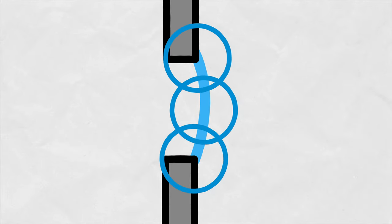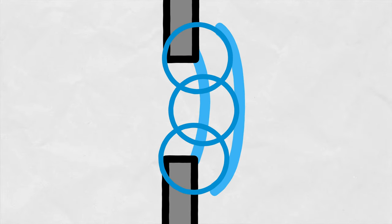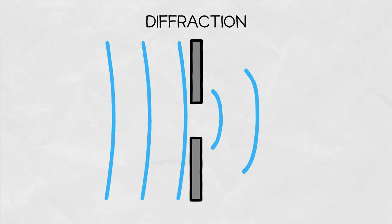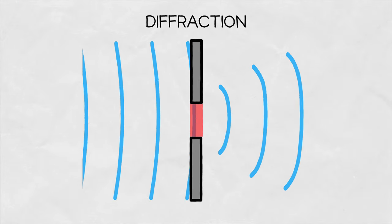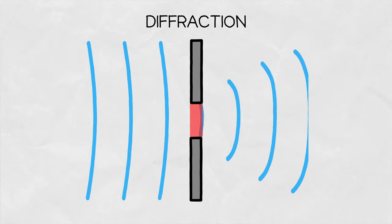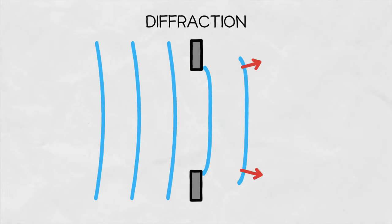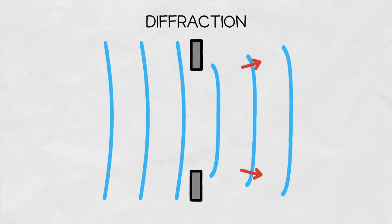When a wave enters an opening it becomes a new source of spherical waves and it seems like the original wave was spread out. Diffraction is best observed when the size of the opening is comparable to the wavelength of the wave. When we make the opening larger, the effect is still there but much less dominant.